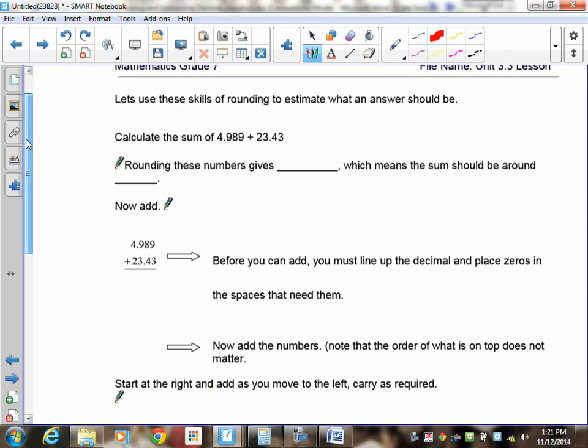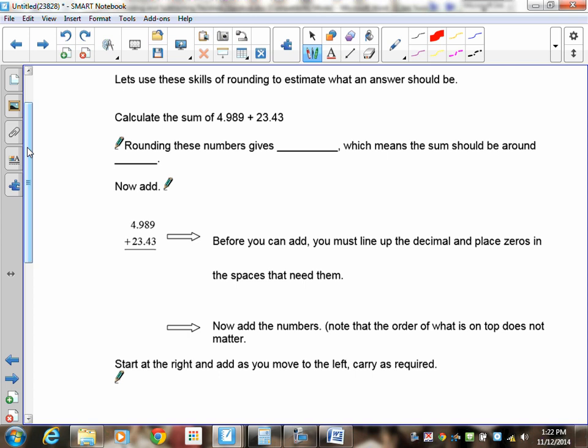Let's use these skills of rounding to estimate what an answer should be. I want to calculate the sum of 4.989 plus 23.43. I need to round these two numbers together. The 4.989, the 9 causes the 4 to go up, so this is going to be around 5. This 4 causes this to stay as a 23. So what ends up happening here is I end up with 5 plus 23, which is 28. This gives me an answer somewhere around 28.